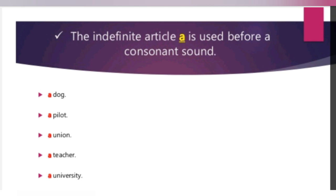Some more examples: a dog, a pilot, a union, a teacher, a university. U is a vowel but it has a consonant sound here, so here we put a union, a university.